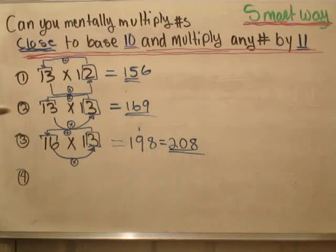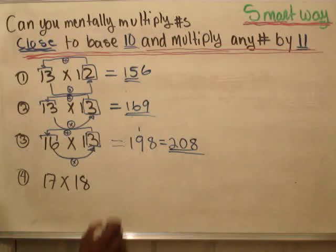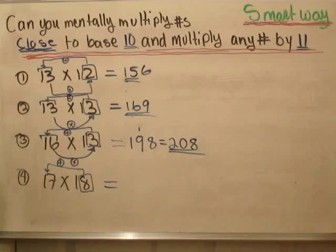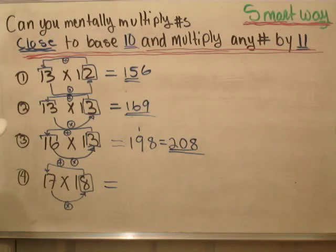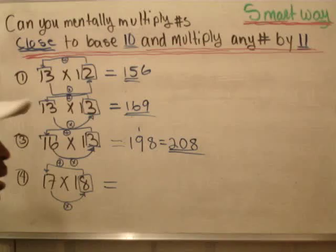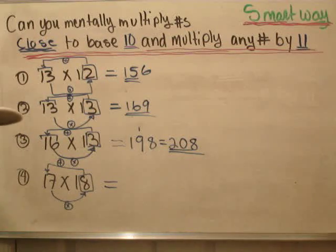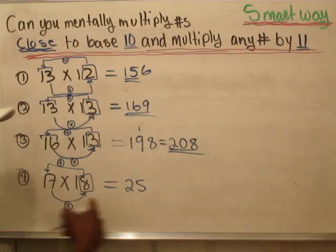Let's do another one that we'll have to carry over. Let's do 17 times 18. We're adding 8 onto 17, then we're going to multiply the last 2. If I add 8 onto 17, it gives me 25. Now 7 times 8 is going to give me 56. You've got to carry the 5. If I put the 5 on top of the 25, it's going to give me 30. Then the 6 goes down, giving me 306. So we do 8 plus 17, which gives us 25, then 7 times 8, which gives us 56.